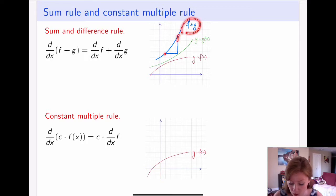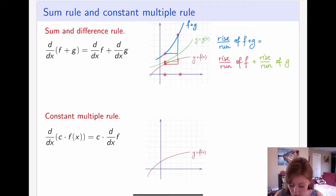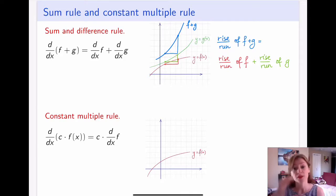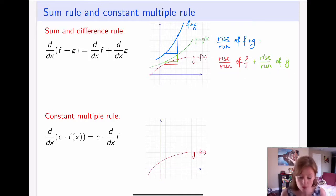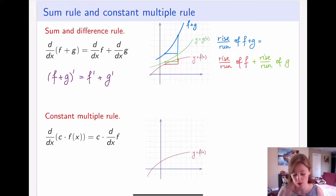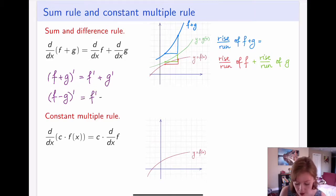So I can break up this function over the denominator and end up with rise over run of f plus rise over run of g, which means I have a separate derivative of f and a separate derivative of g. In other words, (f + g)' = f' + g'. If I have a sum, I can split them up and compute the derivative separately. And the same is true for the difference: (f - g)' = f' - g'.